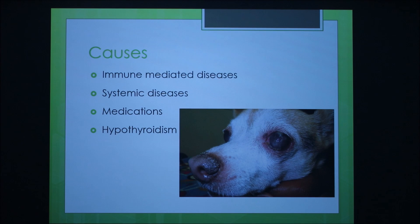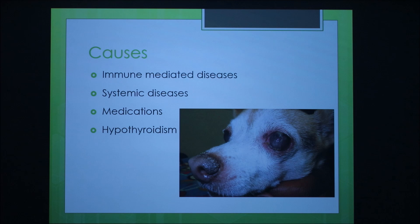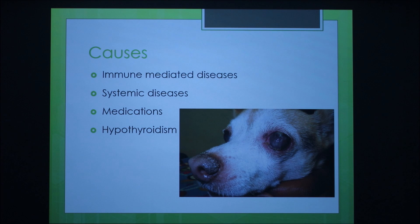It can be caused by many factors. Immune-mediated disease — not quite sure why it does this — is when the body's own cells end up attacking the tear glands, so the tear glands can't produce a sufficient amount of tears. Systemic diseases such as canine distemper virus can also cause this, as can side effects from different medications the dog might be taking, or hypothyroidism.